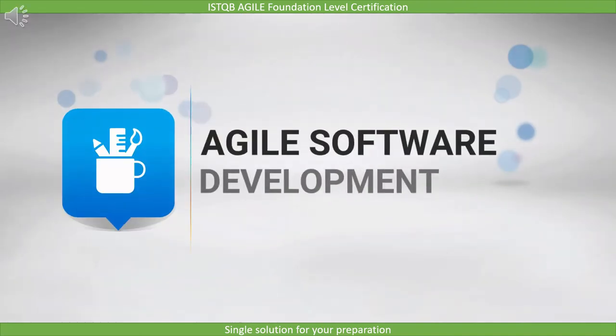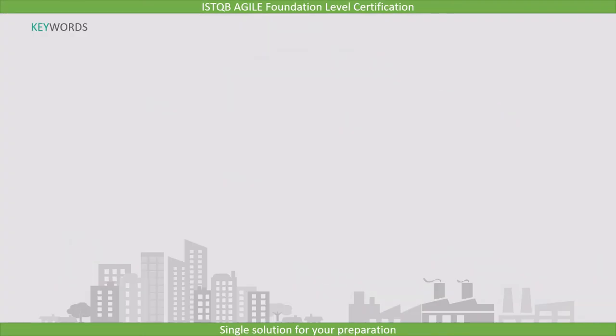The first chapter is Agile Software Development. This is an introductory lecture where we will see what we are going to learn in this chapter. Let's first go through all the keywords which you should know at the end of this lecture. I am listing them here so that you pay more attention when they are covered in the lecture.